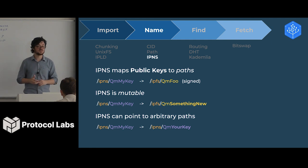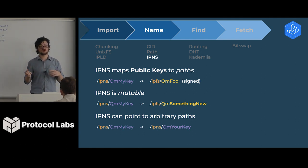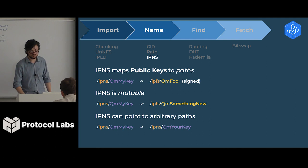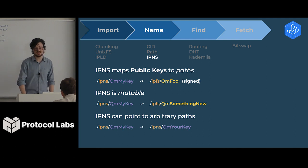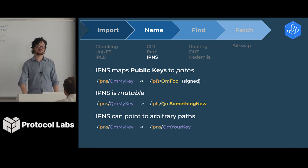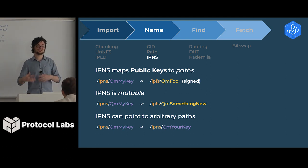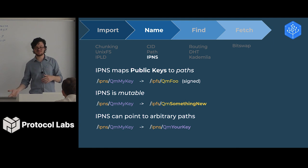IPNS can actually point to arbitrary paths. I can use IPNS to point to IPNS, or in theory to point to Swarm, or really any path I want. It's not system-specific; it's a general-purpose tool. If you've ever used IPNS and found it slow or not working — I'm sorry. This is actually a problem with the DHT, the system we currently use for resolving IPNS paths. We're working on improving that. It's not an inherent issue in IPNS itself.